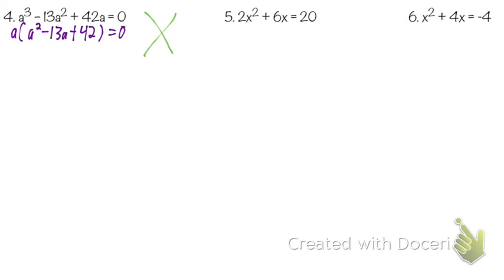We make our X for three terms inside the parenthesis. What goes to the top? 42 — it's 1 times 42. What goes to the bottom? Negative 13. If it multiplies to a positive on top, that's two of the same sign. If it's going to add to a negative, it has to be two negatives. So we need factors of 42 that add to 13: 1×42, 2×21, 3×14, 6×7. Six and seven work.